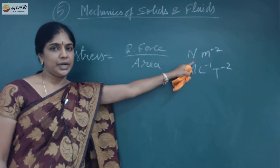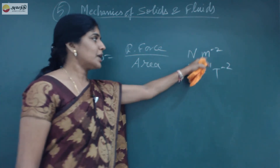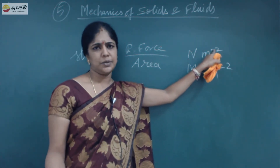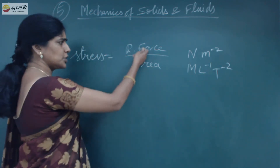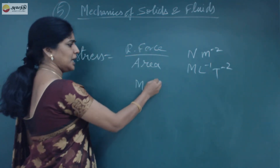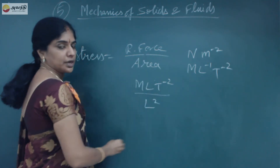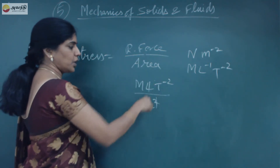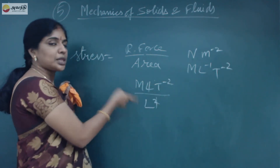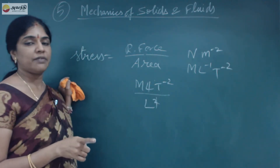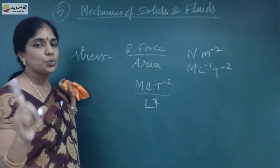For force, Newton per meter square. The denominator has a power of minus 2. For force: mass into acceleration gives M·L·T⁻². For area, L squared. One L cancels with one L, leaving L with a power of minus 1. So the dimensional formula becomes ML⁻¹T⁻².